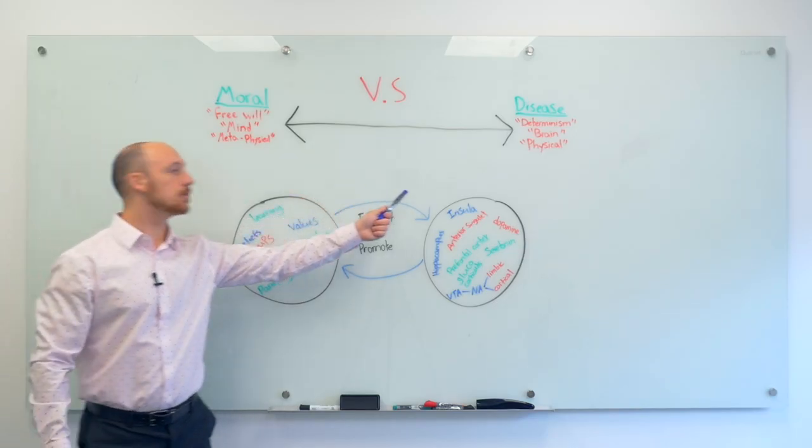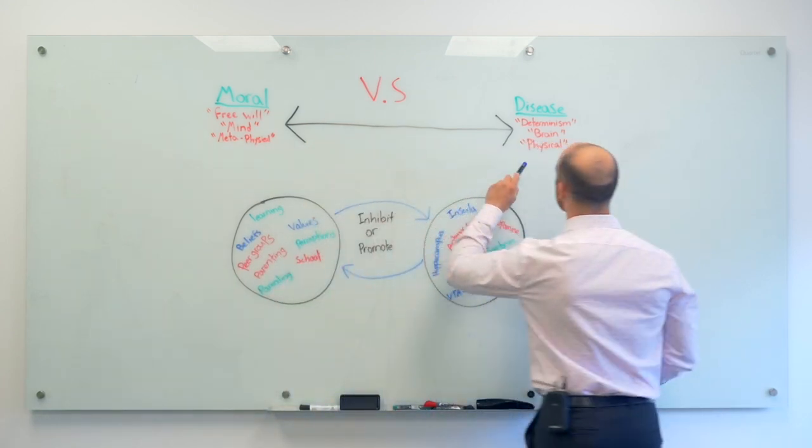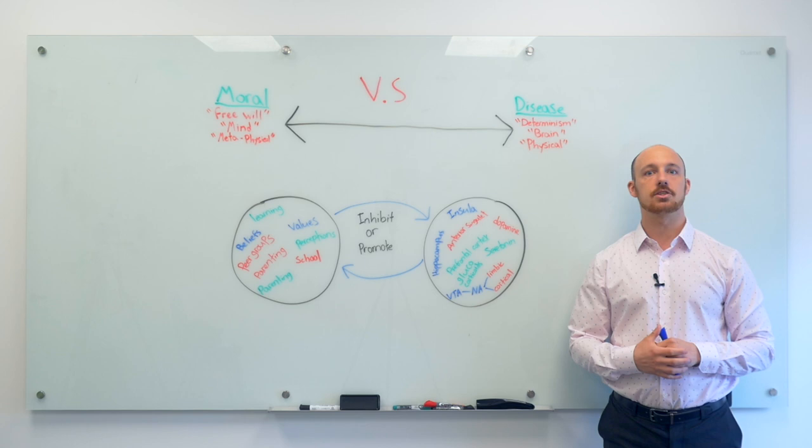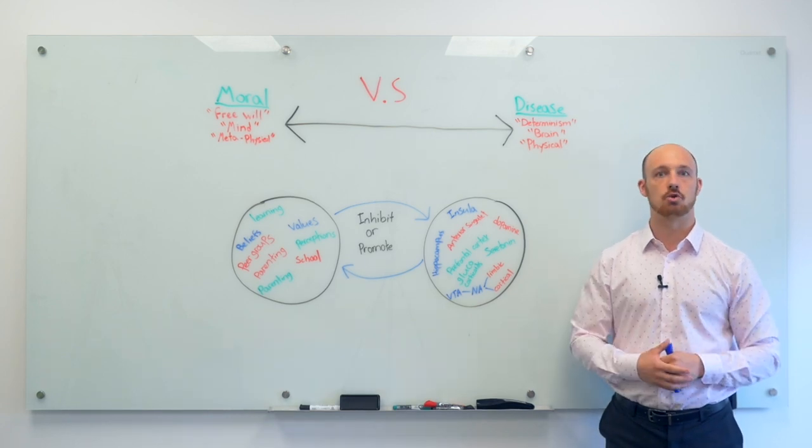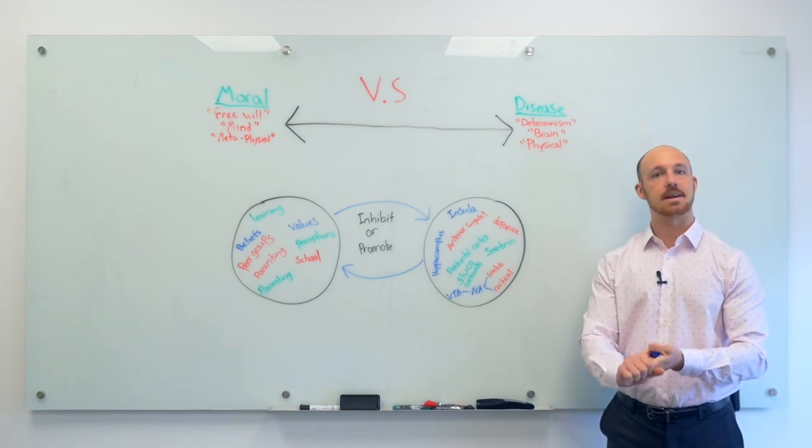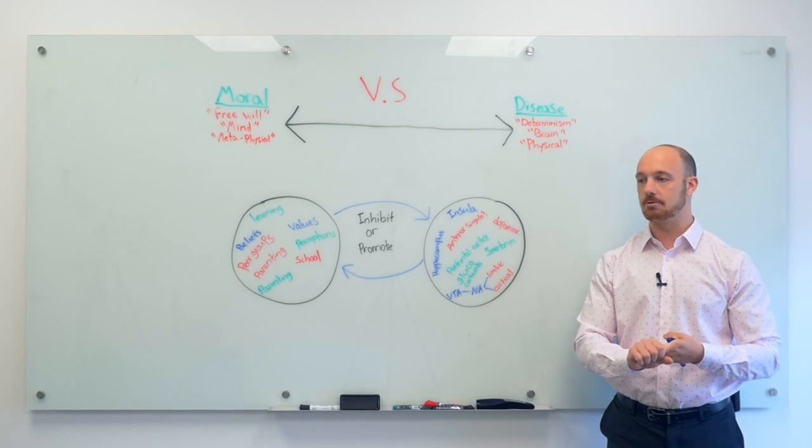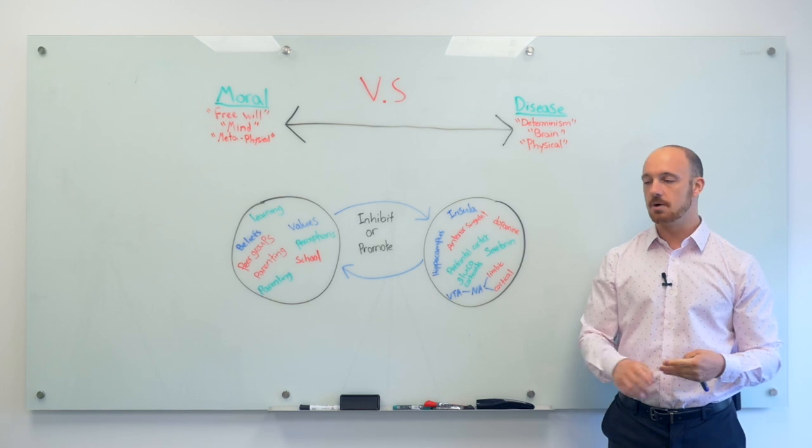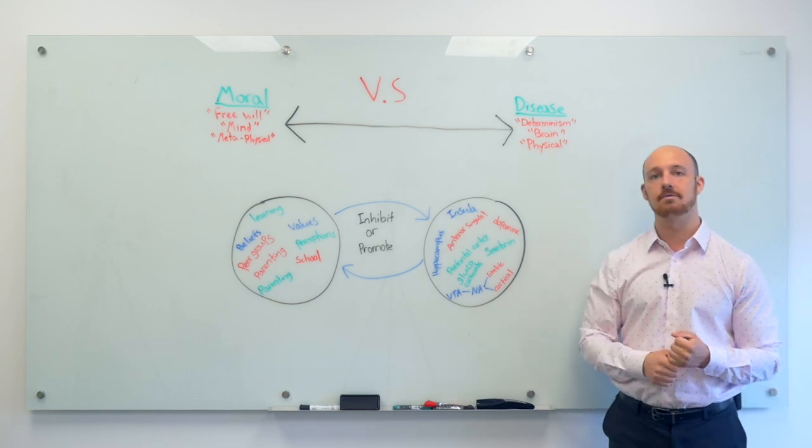And now we got the disease model. The disease model states that essentially you have a disease, so you don't have any control over it. Like you can't get mad at someone for having cancer. You can't get mad at someone for having HIV. You can't get mad at someone for having Lou Gehrig's disease. Basically, we don't have a choice in our behaviors.